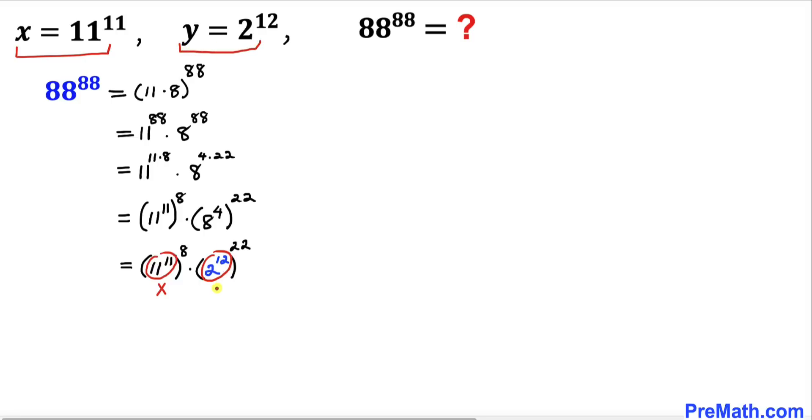Therefore we got 88 power 88 equals to x power 8 times y power 22, and that's our answer in terms of x and y.